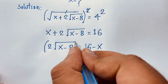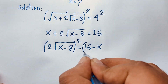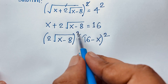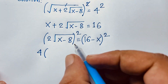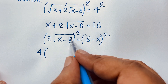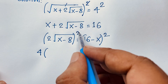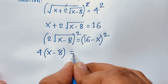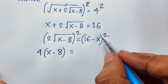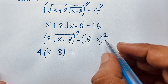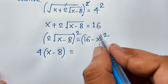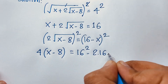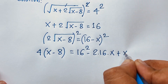Now I square both sides again. You can see easily here: 2 squared is 4, then square root of (x minus 8) — the square root and square cancel — so we get 4 times (x minus 8) equal to (16 minus x) squared. Expanding using (a minus b) squared equals a squared minus 2ab plus b squared, that gives 256 minus 32x plus x squared.